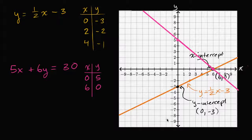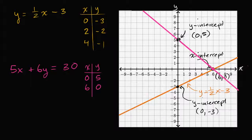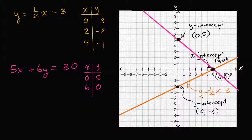Now what are its x and y-intercepts? Well, we already kind of figured it out, but the intercepts themselves are the points on the graph where they intersect the axes. This right over here is the y-intercept — that point is the y-intercept, and it's always going to happen when x is equal to zero. When x is equal to zero, we know that y is equal to five: the point zero comma five. And the x-intercept is the point six comma zero — that point right over there.